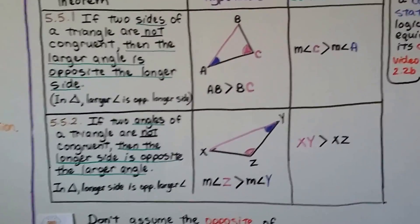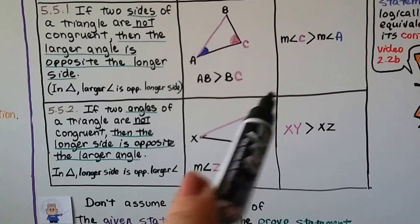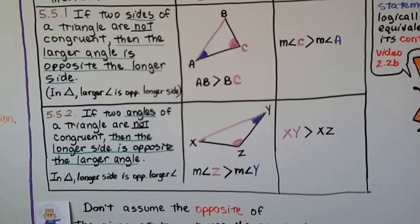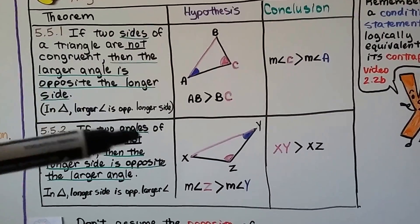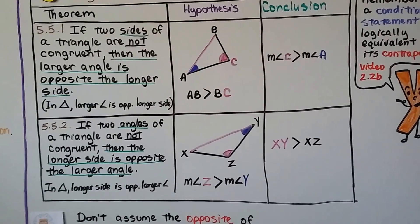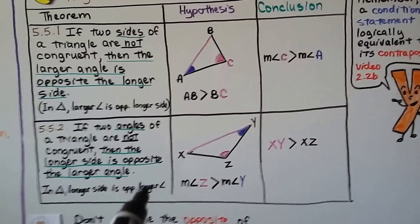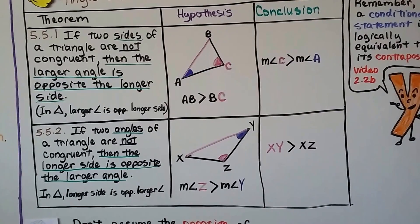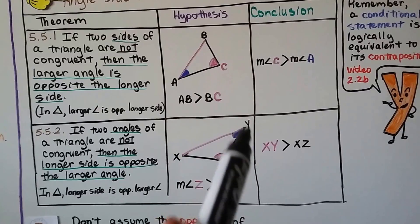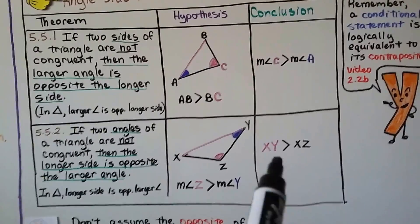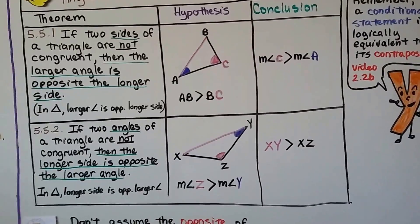Theorem 5.5.2: if two angles of a triangle are not congruent, then the longer side is opposite the larger angle. In a proof, you'd write: in a triangle, longer side is opposite larger angle. So the measure of angle Z, the pink one, is greater than the measure of angle Y, the blue one — therefore XY is greater than XZ. It's opposite the larger angle.